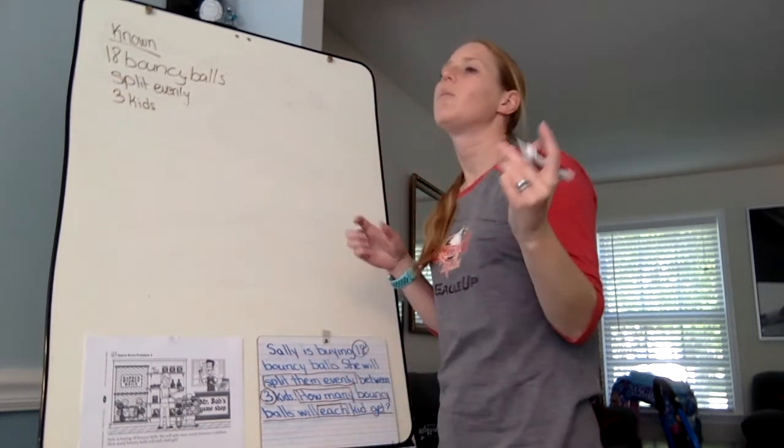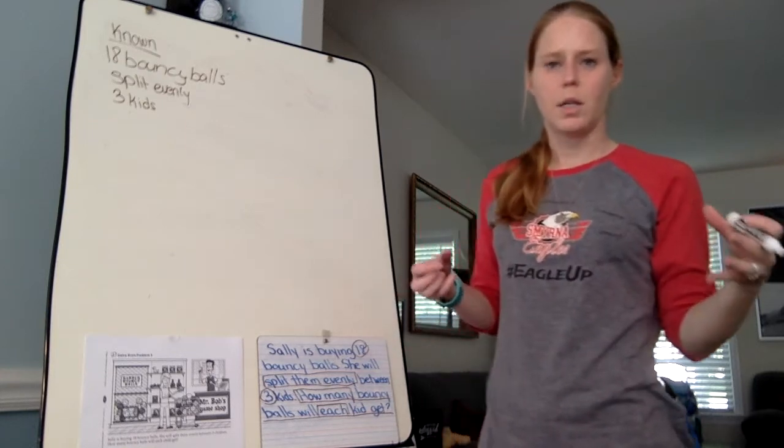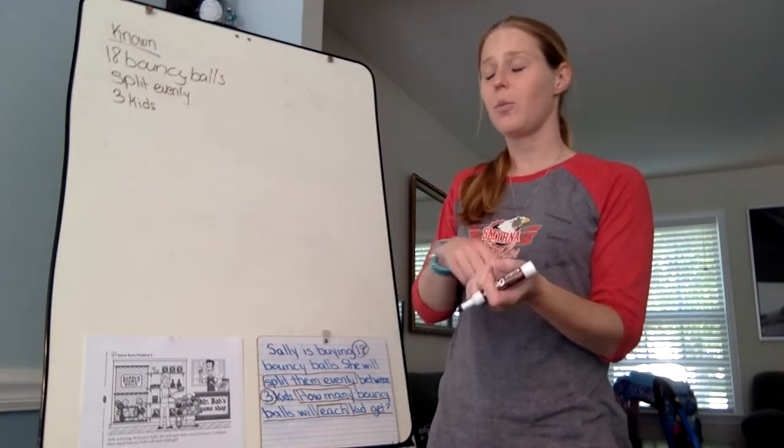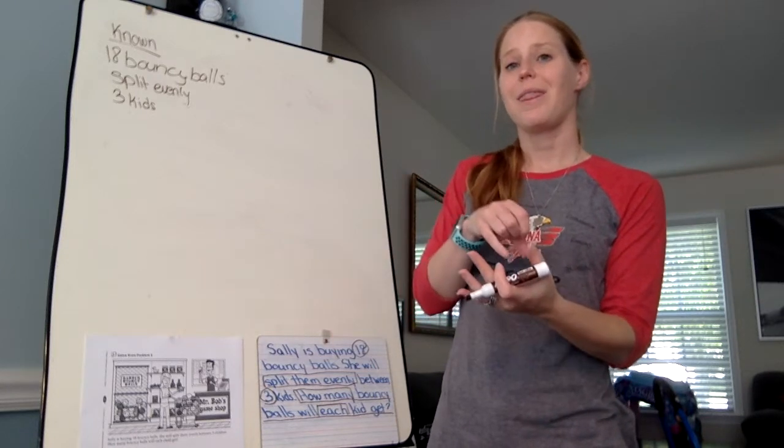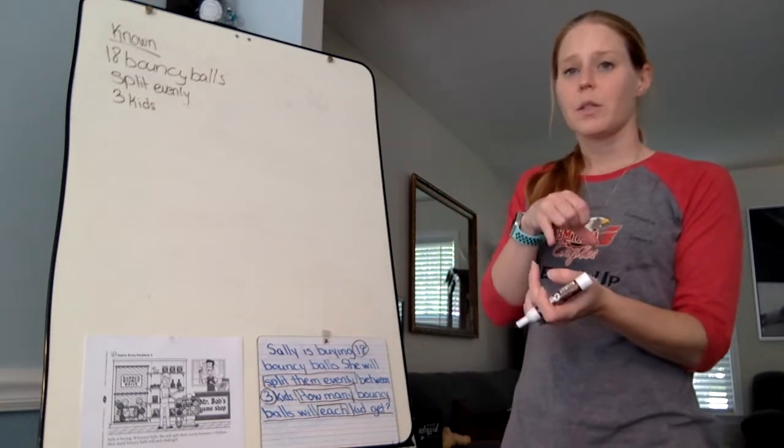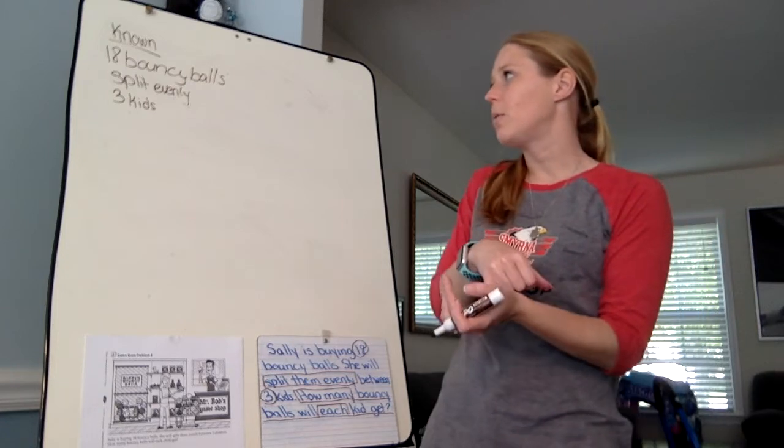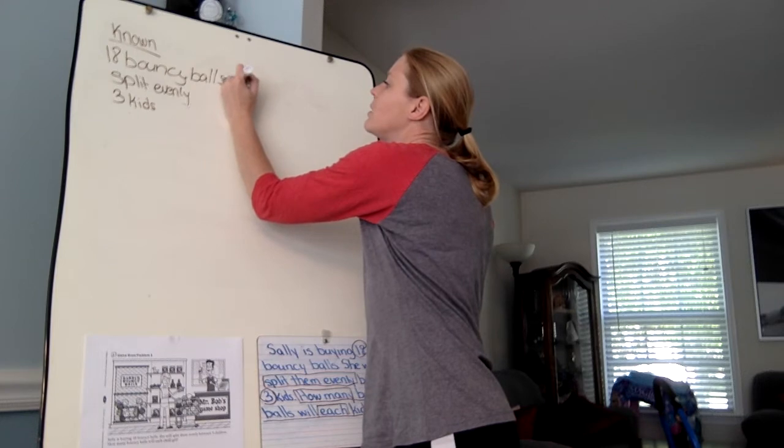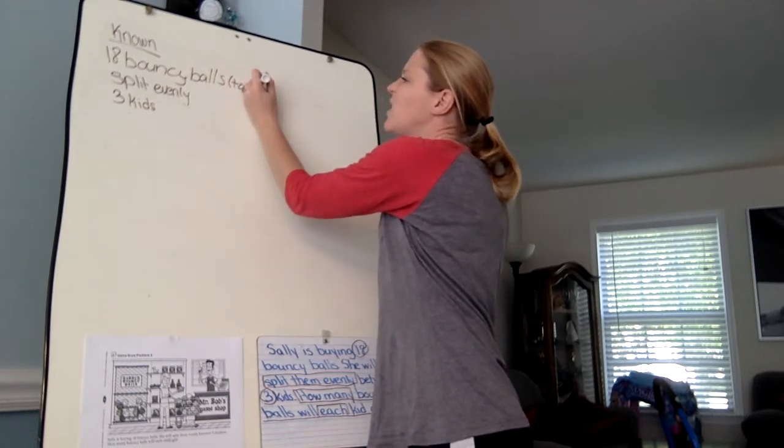So this tells me I'm looking for equal size groups with each one of these kids. Each kid is considered a group and how many are in that group or how many each kid is getting. That's what I need to figure out. So I think what we're looking at in this problem, I'm going to say my 18 is my total. So I really think this is going to be a division problem.